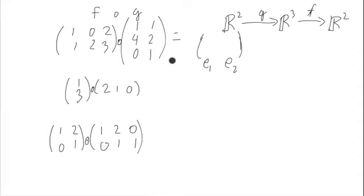If we start, we take e1, and we put it into g. What it outputs is actually this column, 1, 4, 0. So e1 outputs this column from g.